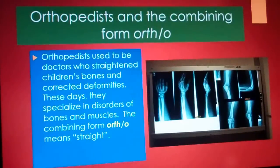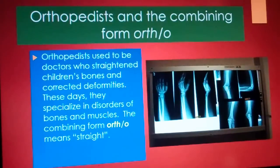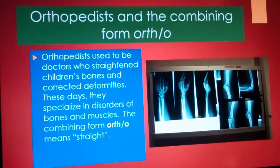Orthopedist — the combining form is ortho. Orthopedists used to be doctors who straightened children's bones and corrected deformities. These days, they specialize in disorders of bones and muscles. The combining form ortho means straight.